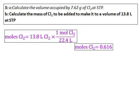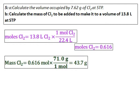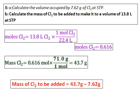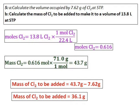So I get the moles of chlorine as 0.616 and from the moles of chlorine I can get the mass of chlorine using the molar mass. Once I get the mass of chlorine I know that this must be the mass to occupy a volume of 13.8 litres. And therefore a mass of chlorine that I have to add to get this much will be the difference of the two masses and that comes as 36.1 grams.